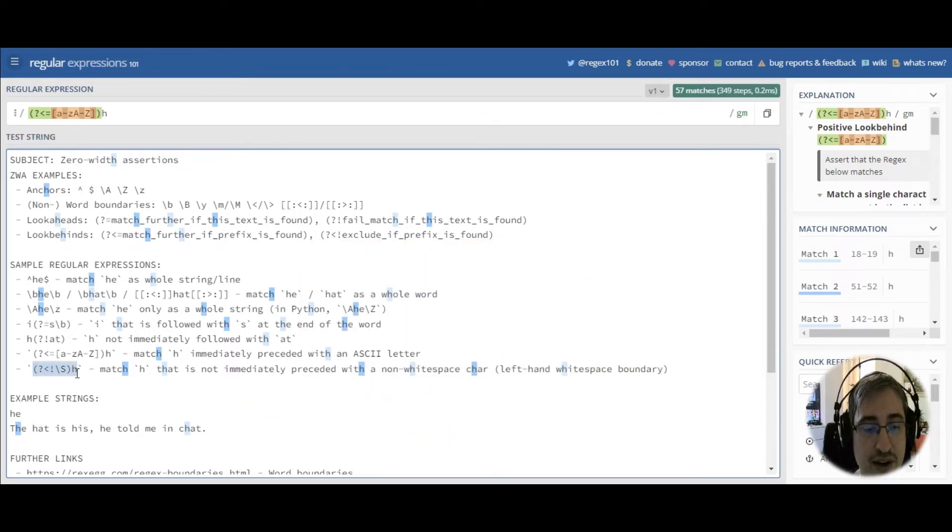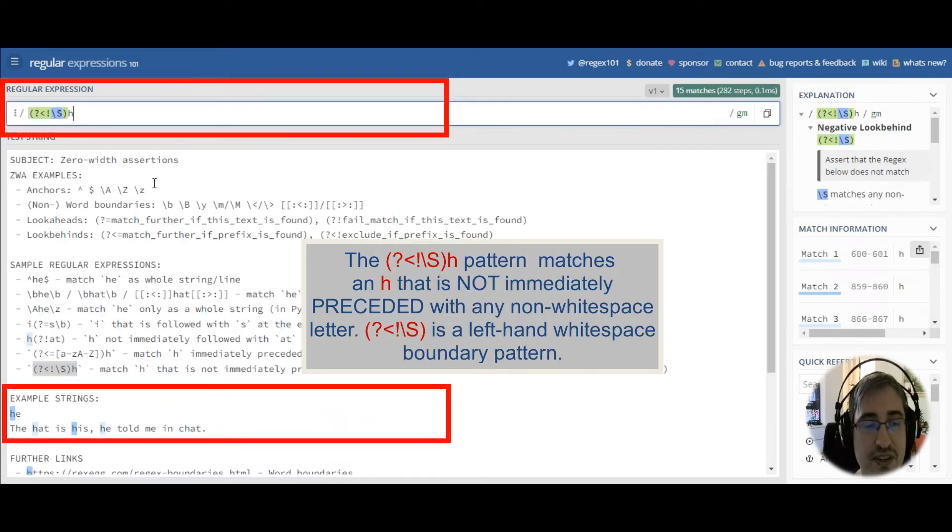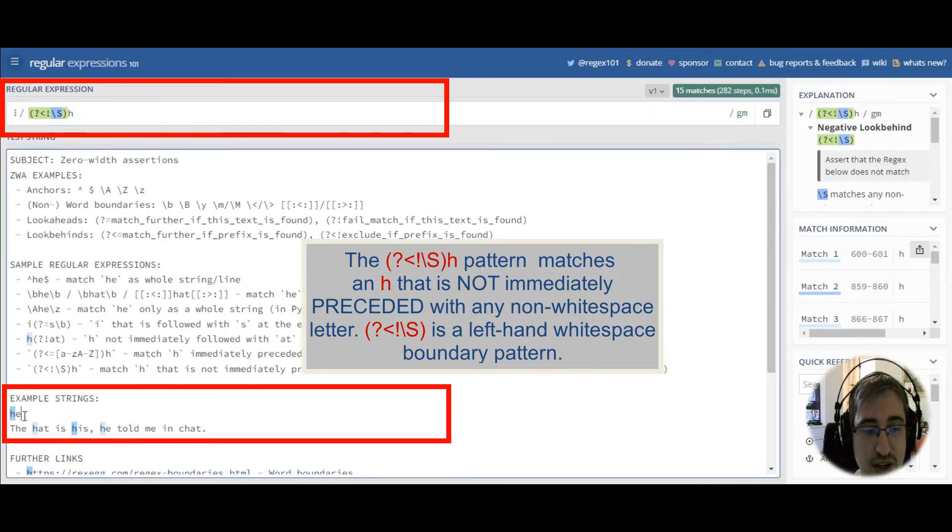Now let's see how negative look-behinds work. So, this example matches any h that is not immediately preceded with a non-white space character. It just means that there must be a white space or start of string immediately before h. That's why we match h here. There is a new line right before it. We match this h in hat, because there's a space right before hat. And we don't match any h in chat, because here h is immediately preceded with a word character, and it's not a white space character.